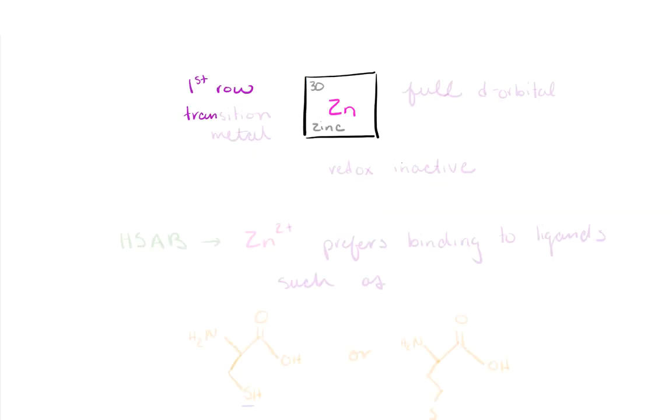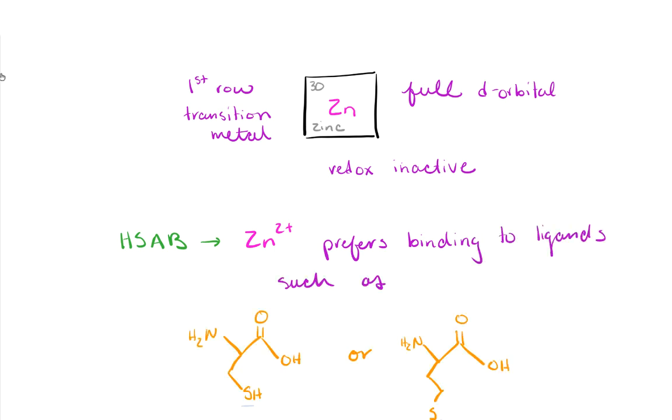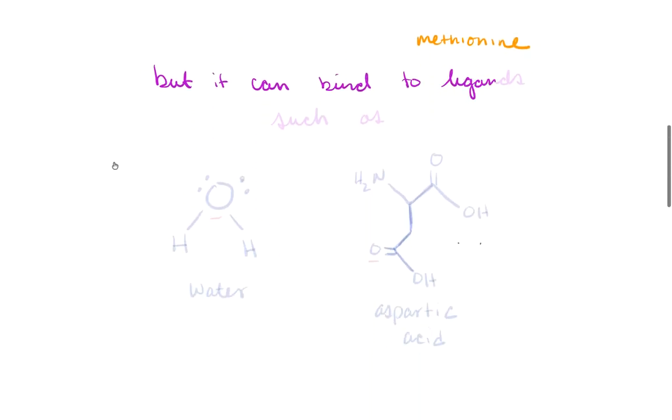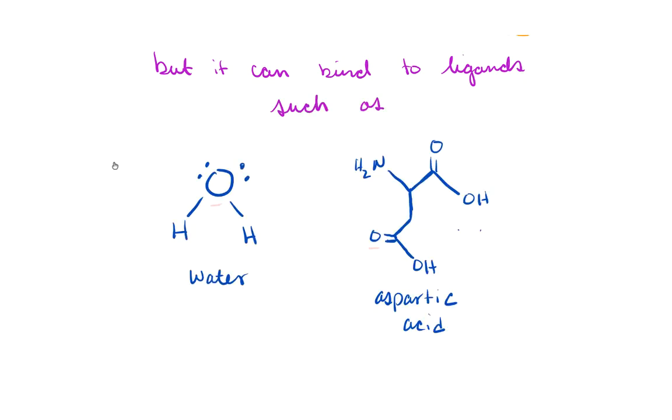Now, zinc is an interesting metal. It is a first-row transition metal, has a full set of d-orbitals, and is redox inactive. According to hard-soft acid-base theory, zinc is a borderline soft metal. This means that it prefers to bind to soft donor ligands, such as cysteine and methionine, but it also has the capability to bind to hard donor ligands, such as water.